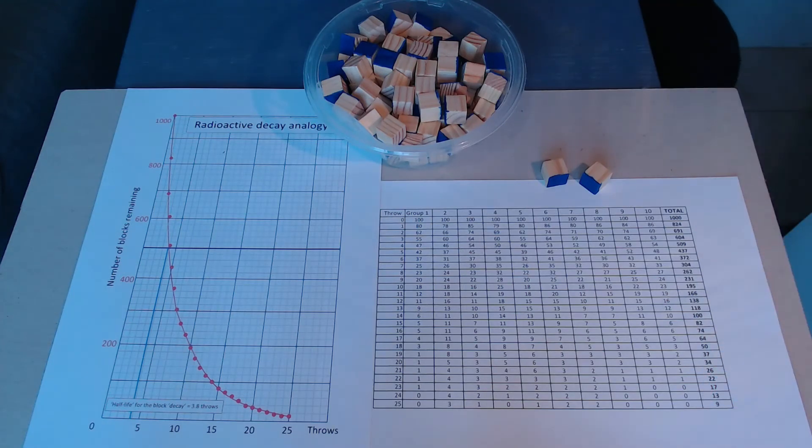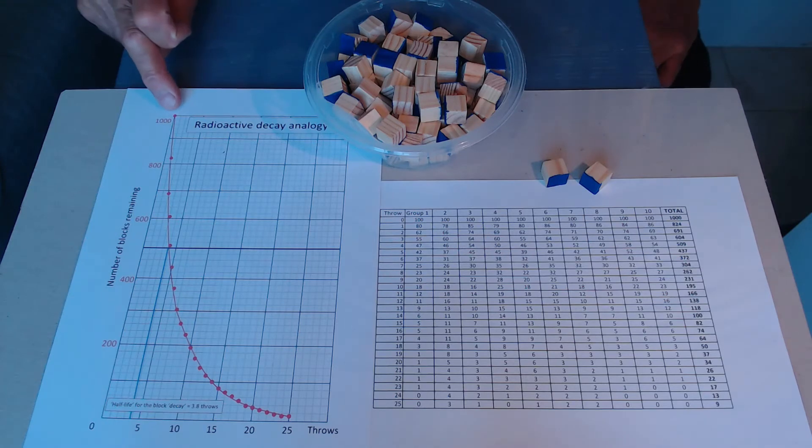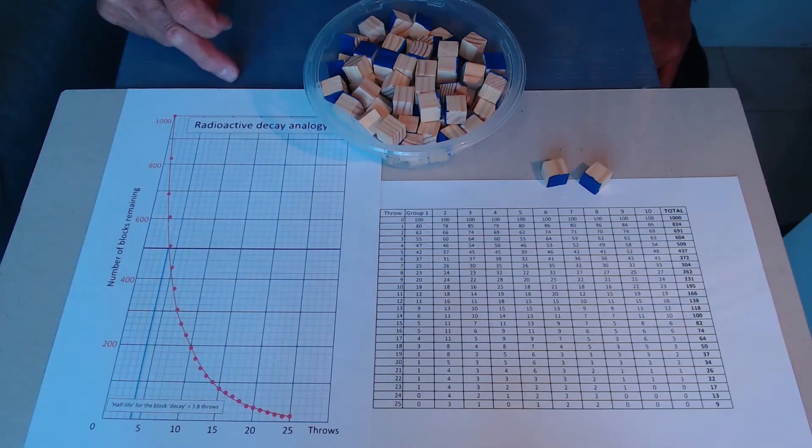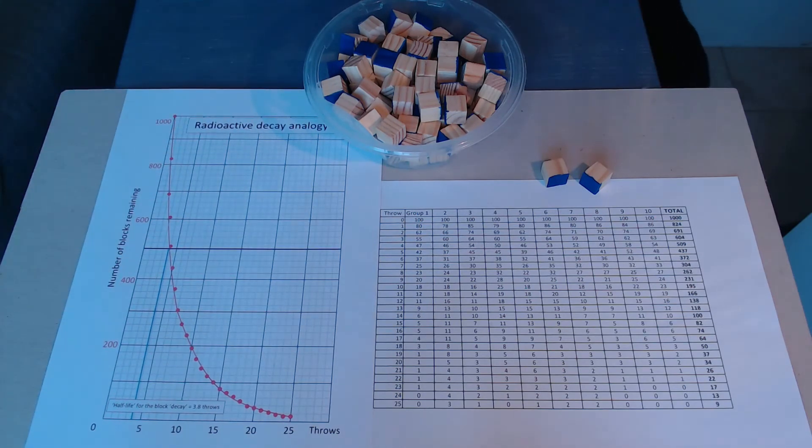Why so many throws? Well, it's much better accuracy. The more throws you take, you can take an average, and that's what I've done. You can see the graph there begins at one thousand and it's a beautiful curved line for what was a very simple experiment.